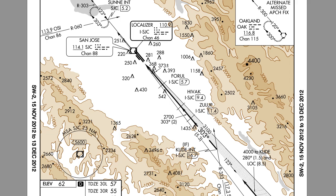As you can see, this is the ILS to runway 30L in San Jose, California. The approach procedure is fairly straight, since it's an ILS. We can see the localizer fan on this overhead view, and we can see the approach course.